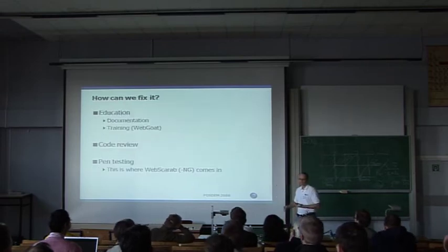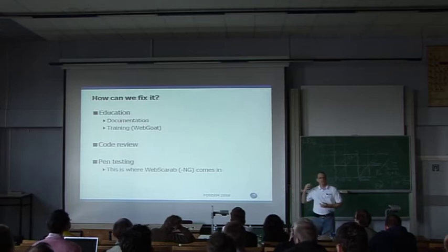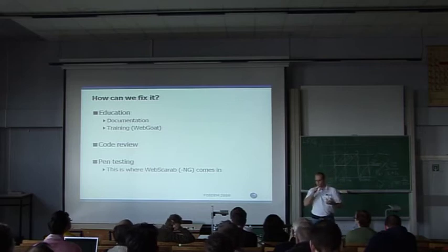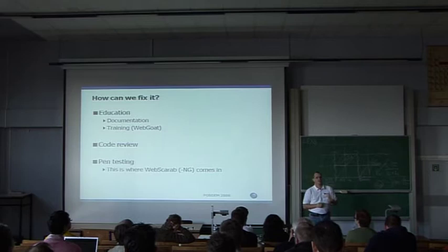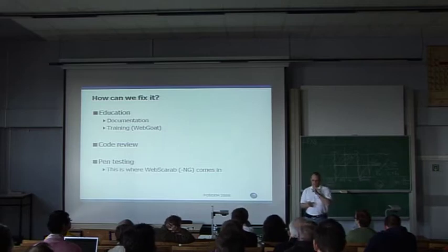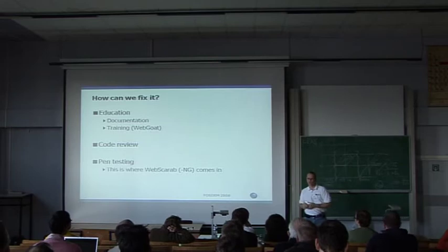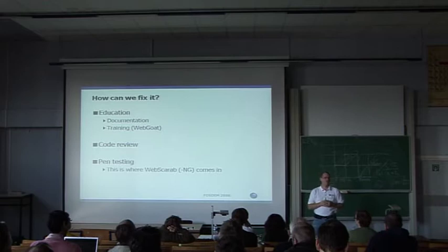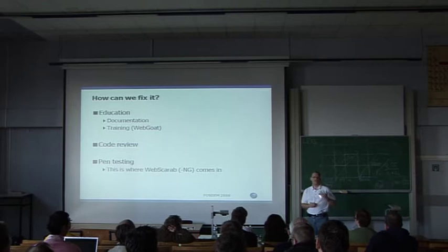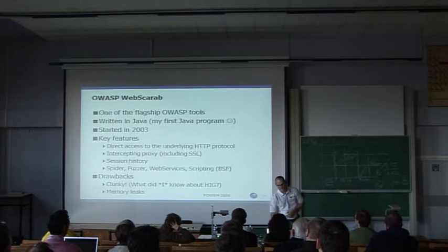So what can we do? Some of the things the OWASP project is trying to do is educating people, providing documentation. We also do a lot of training through the SANS organization. We provide tools where people can experiment with various vulnerabilities — for example, WebGoat. Get people who know what they're doing to review your code for security vulnerabilities. And then of course you can try penetration testing at an application level, which is where WebScarab comes in.